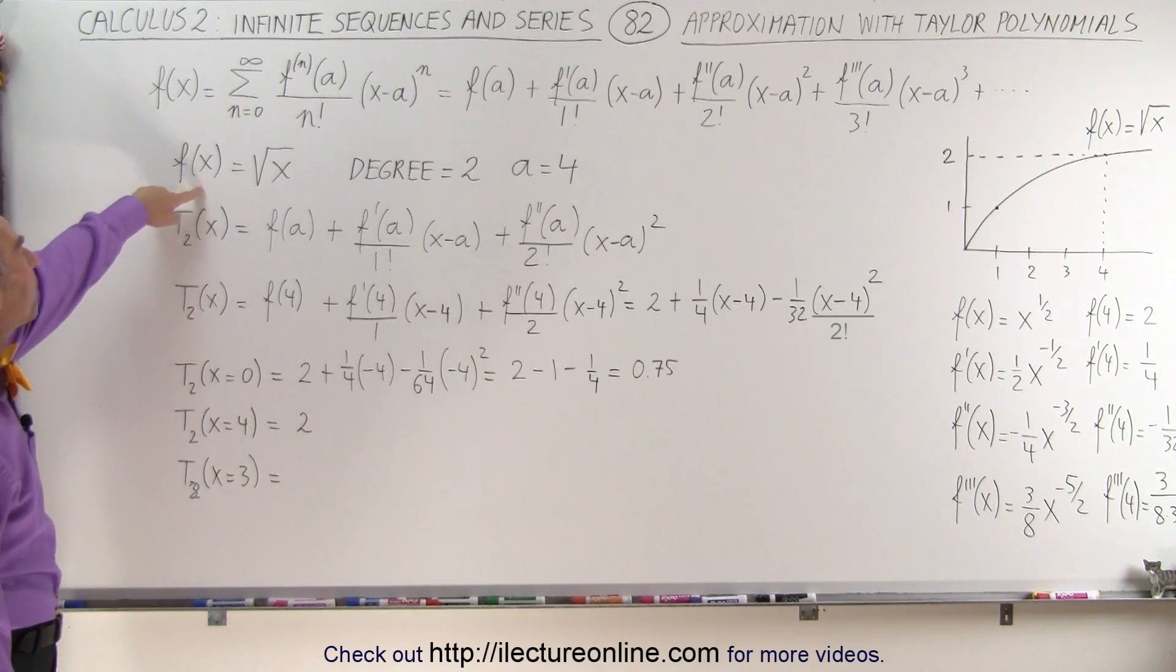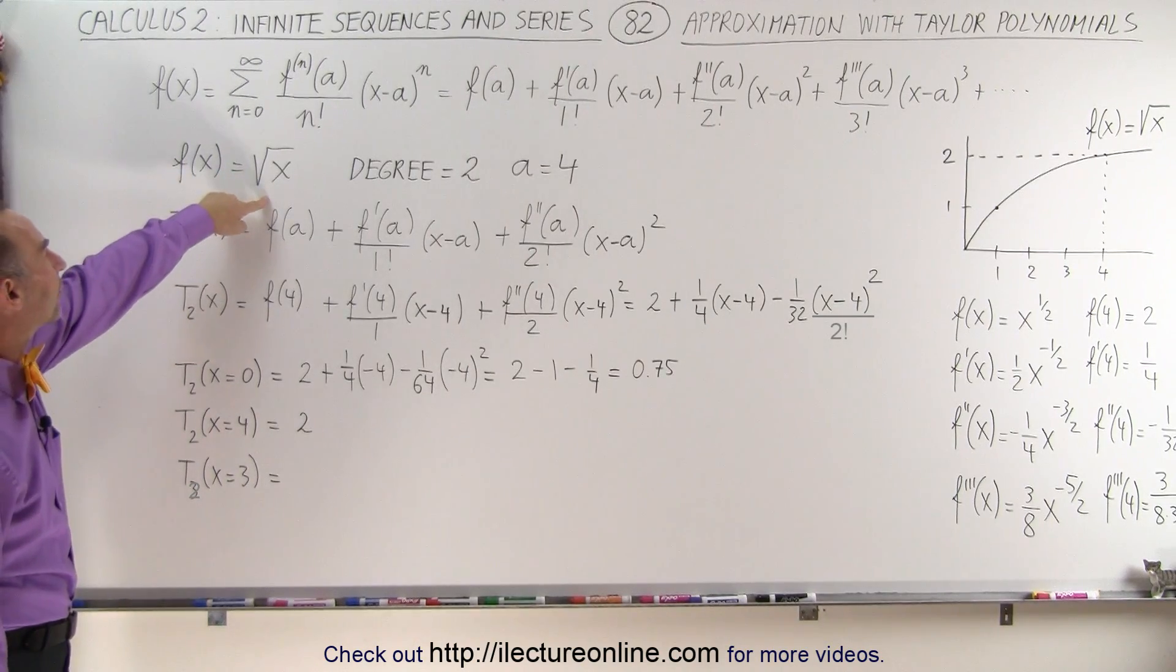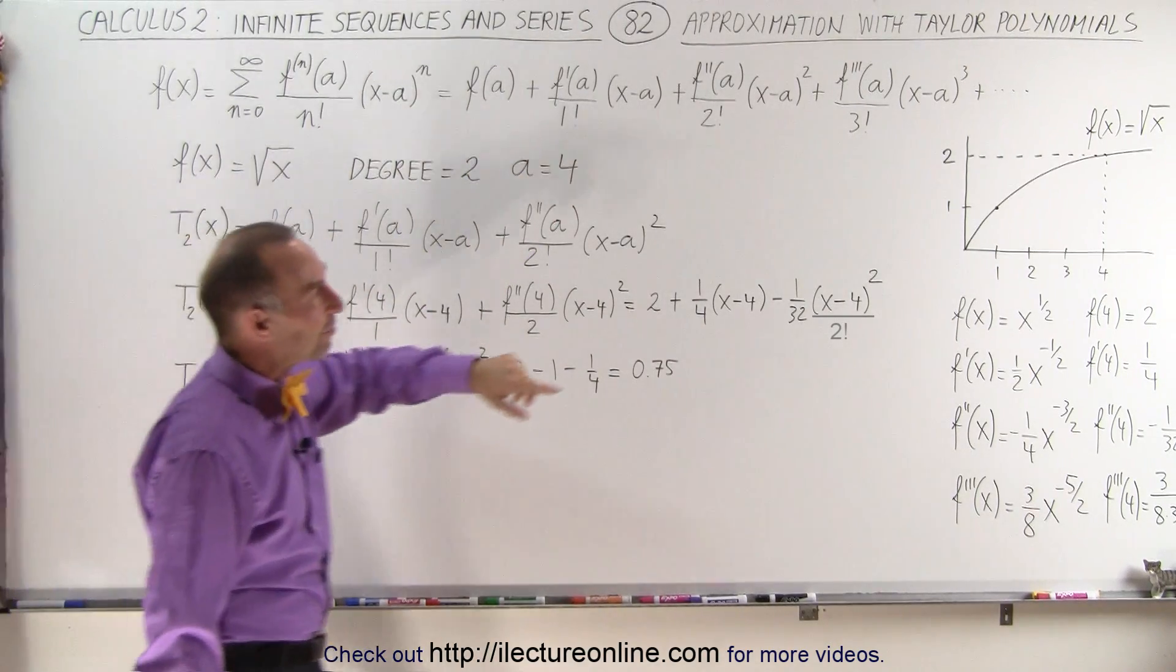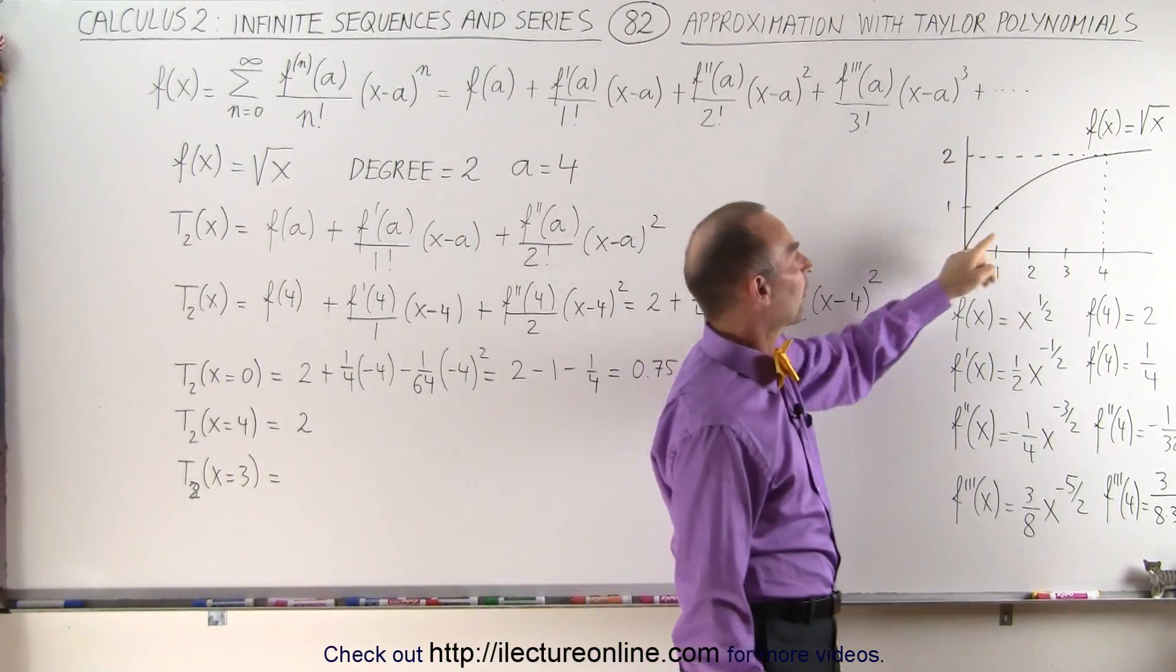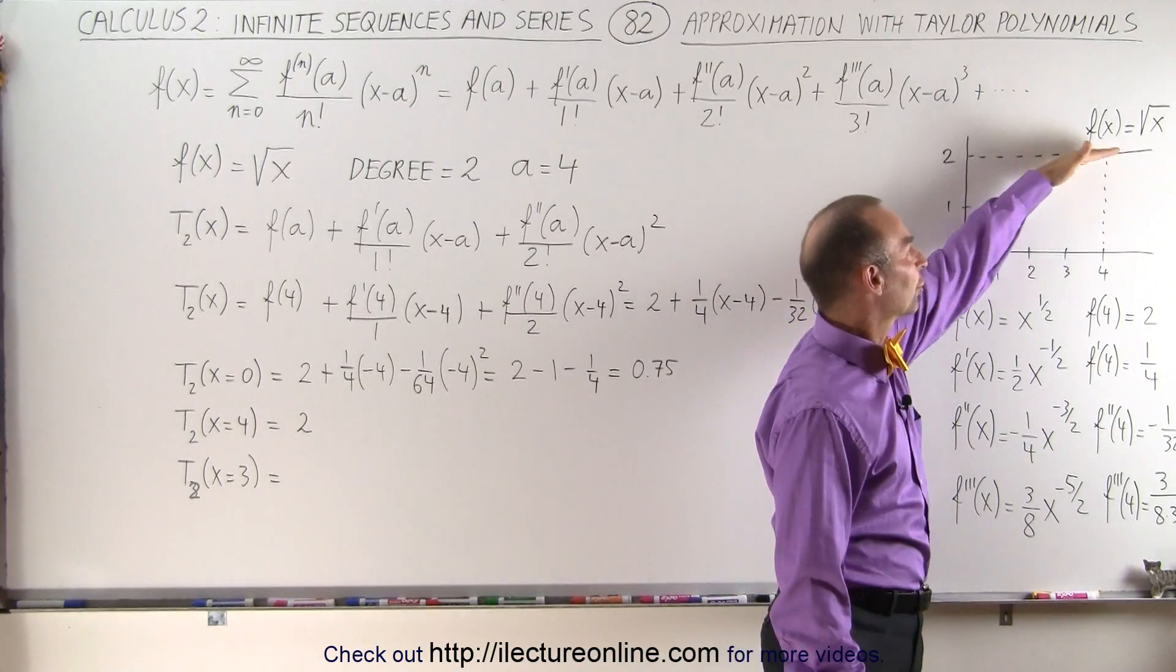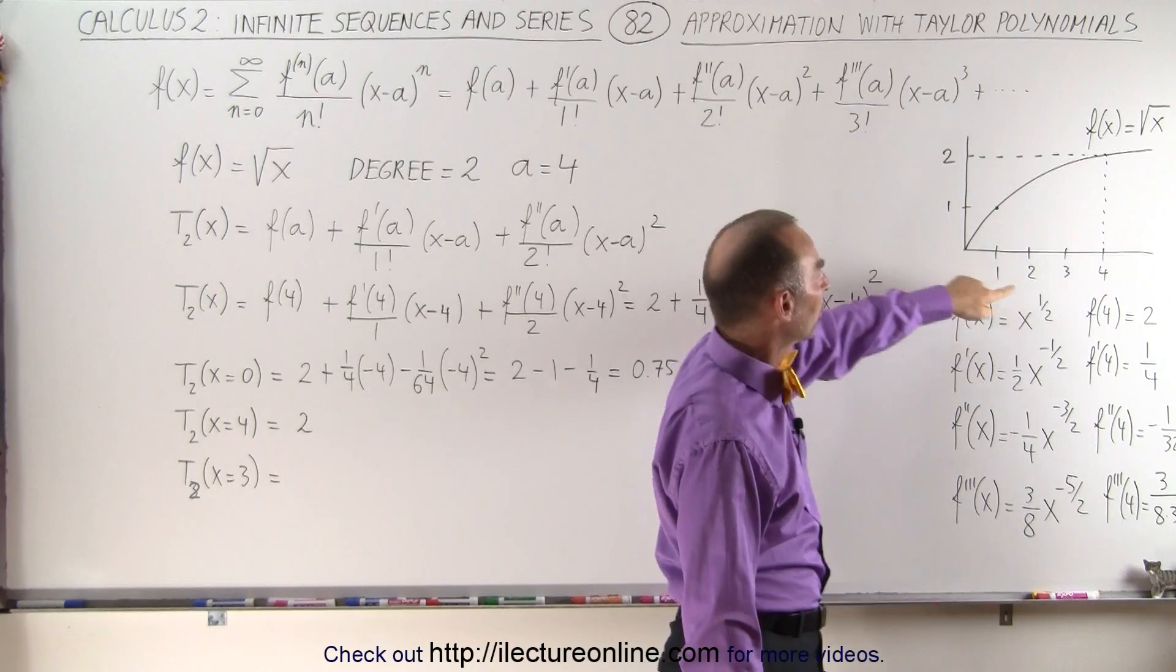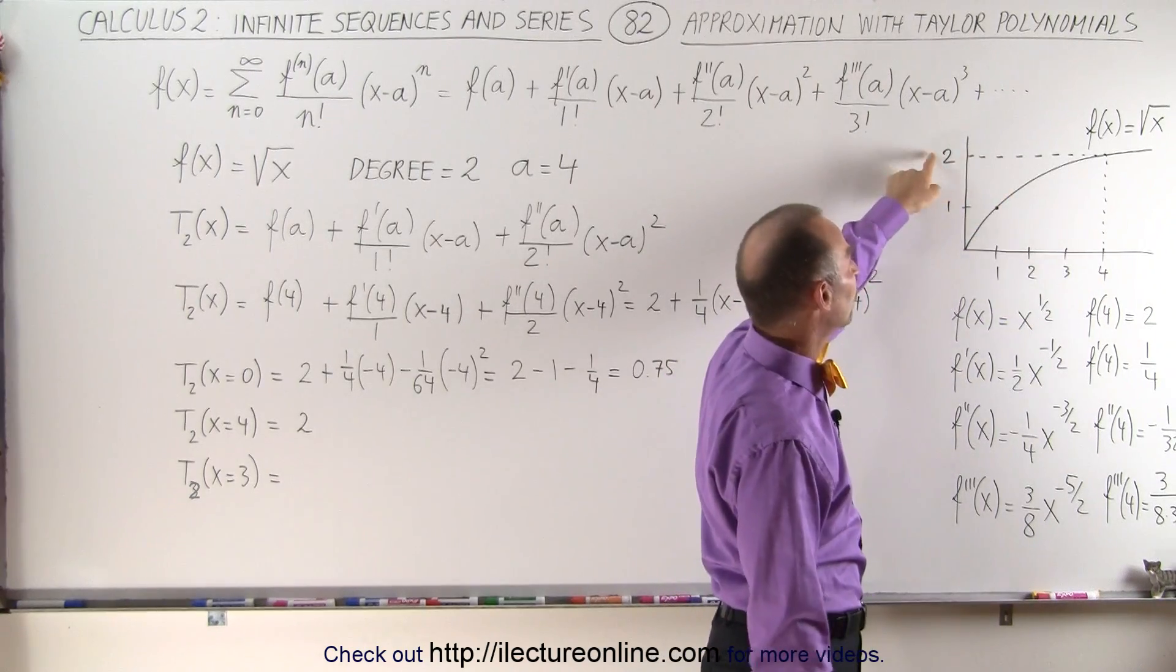So now our function f(x) is going to be the square root of x. Here we have the general format of the Taylor series. If we graph out the function f(x) equals the square root of x, then we get this familiar curve. We can see when x equals 1, the square root is 1. When x equals 4, the square root is 2, and so forth.